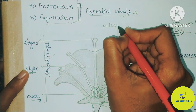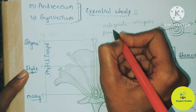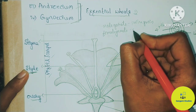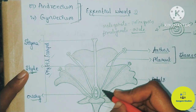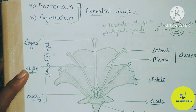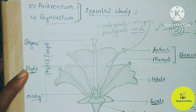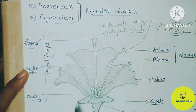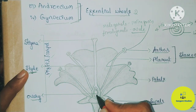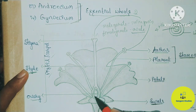The male gamete is the pollen grain. The female gamete is present in the ovary. Pollen grains are released from the male reproductive part of the flower, which is the Stamen — specifically from the Anther. The female reproductive part of the flower is the Pistil or Carpel, and the ovule is present inside the ovary. Pollen grains land on the Stigma during pollination.